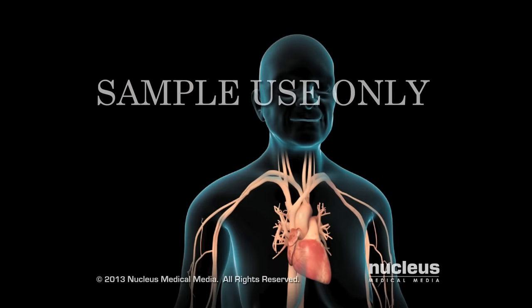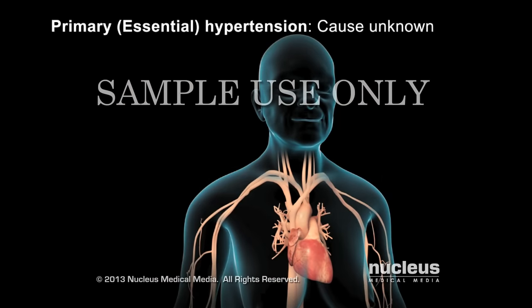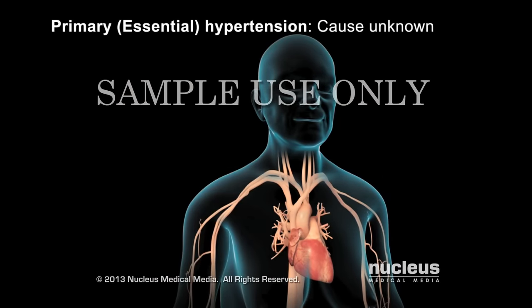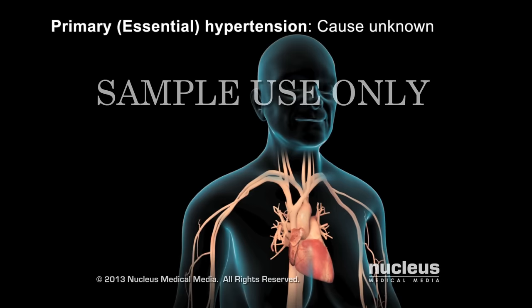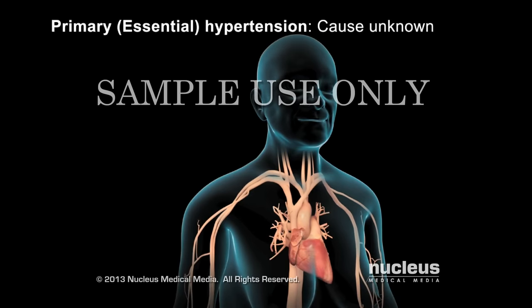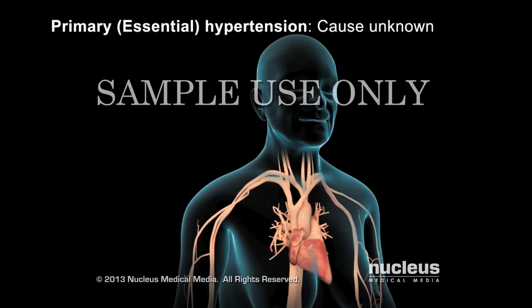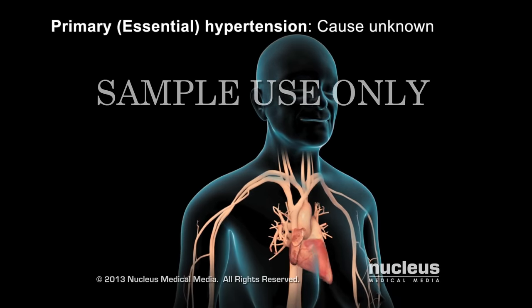In most cases, the cause of high blood pressure, or hypertension, is unknown. This type of high blood pressure is called primary, or essential hypertension.